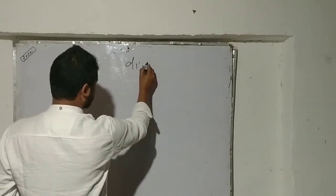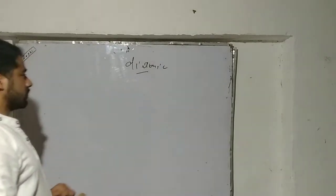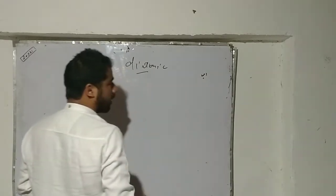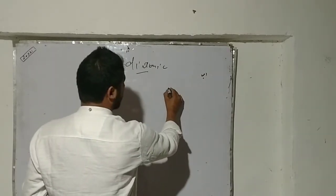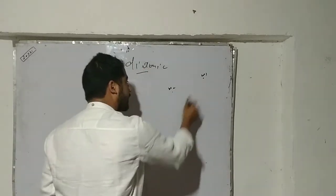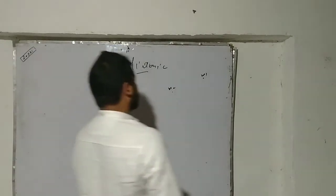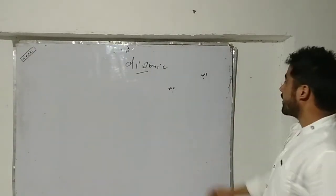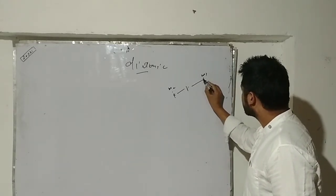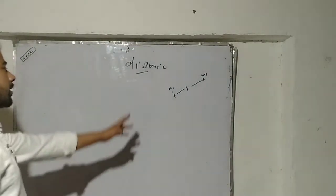For the diatomic molecule, one particle has mass m1 and the other particle has mass m2. The distance from the center of one particle to the center of another is r units. We are interested in computing the rotational energy of this diatomic molecule.